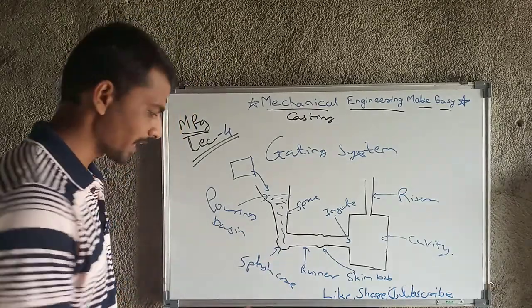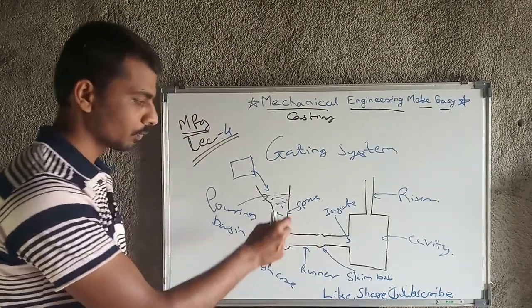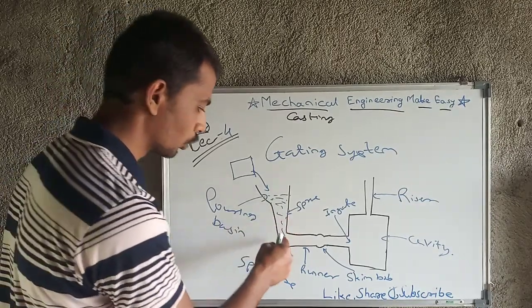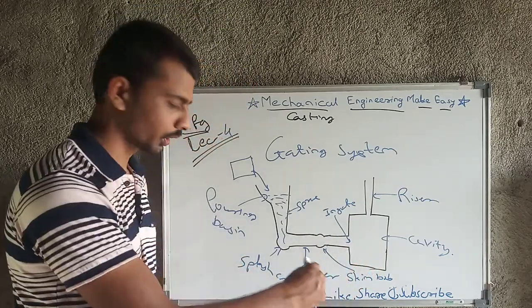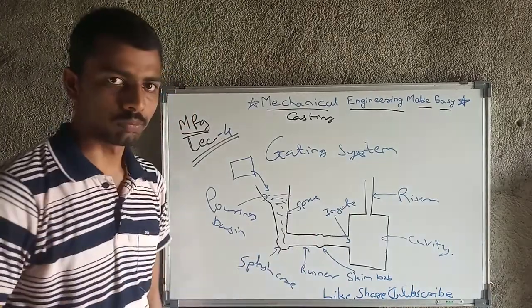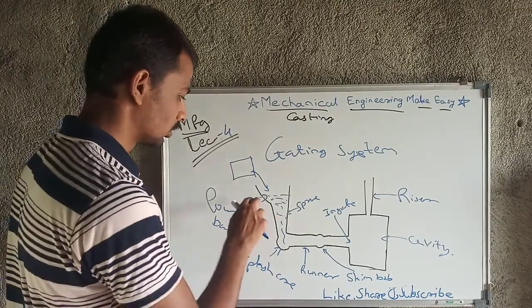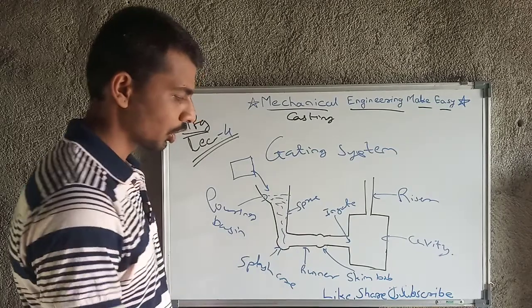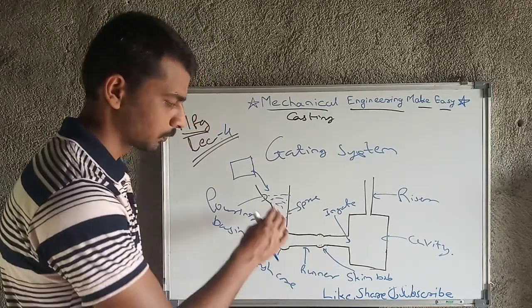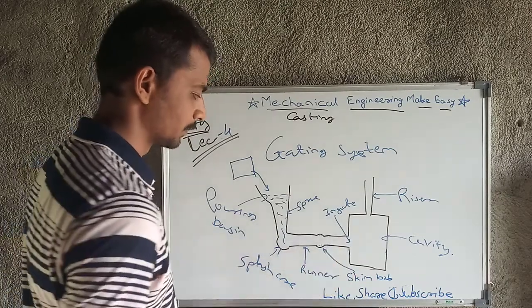The splash core is used after the pouring basin. After that, the runner — the purpose of the runner is to take the molten metal from the sprue and provide it to the cavity. In between the runner we have placed one skim bob, which handles any fluctuation or any air that may be present.